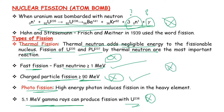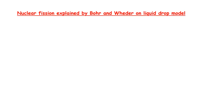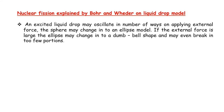Nuclear fission is explained by Bohr and Wheeler using the liquid drop model. In this model, an excited liquid drop may oscillate in a number of ways when an external force is applied. The sphere may change into an ellipse shape, and if the external force is large, the ellipse may change into a dumbbell shape.